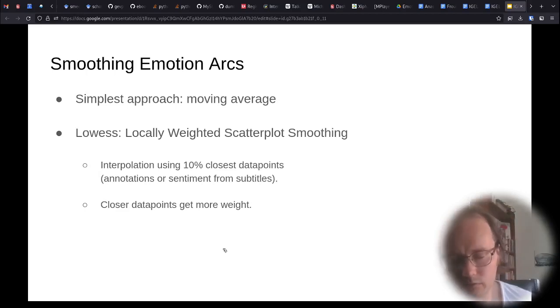If we just take the raw signal of the sentiment or the annotations, we do not get smooth emotion arcs. So therefore, we also apply smoothing. The simplest approach, which I applied in previous work, is to take a moving average over the signal.